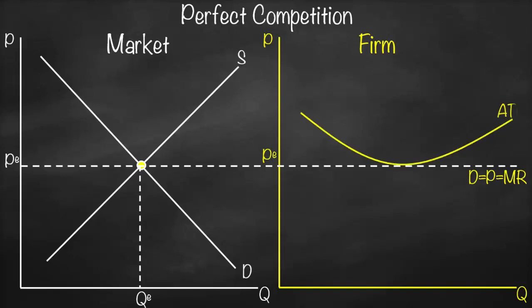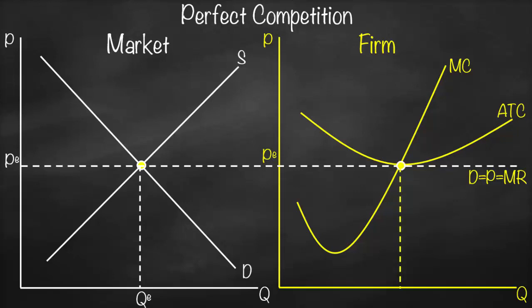Our average total cost is U-shaped, and our marginal cost will intersect the average total cost at its minimum point. Our profit-maximizing condition is marginal revenue equals marginal cost. Marginal revenue is the horizontal line and marginal cost is the Nike-shape curve. At their point of intersection, I go vertically down to get Q*, my profit-maximizing quantity.